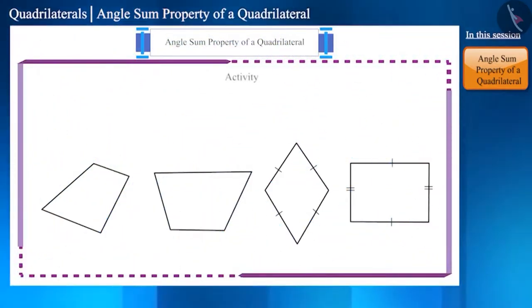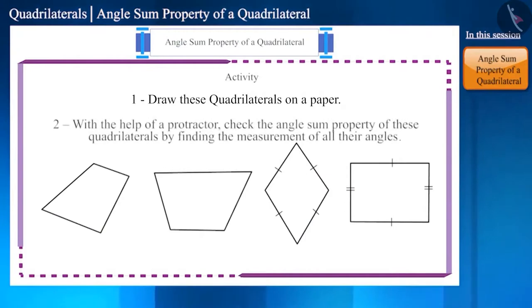Before ending this session, here is an activity. Do this together with your classmates. In the end, you will find that even though these quadrilaterals are different and smaller or bigger in size, the sum of the measurements of their internal angles is 360 degrees.